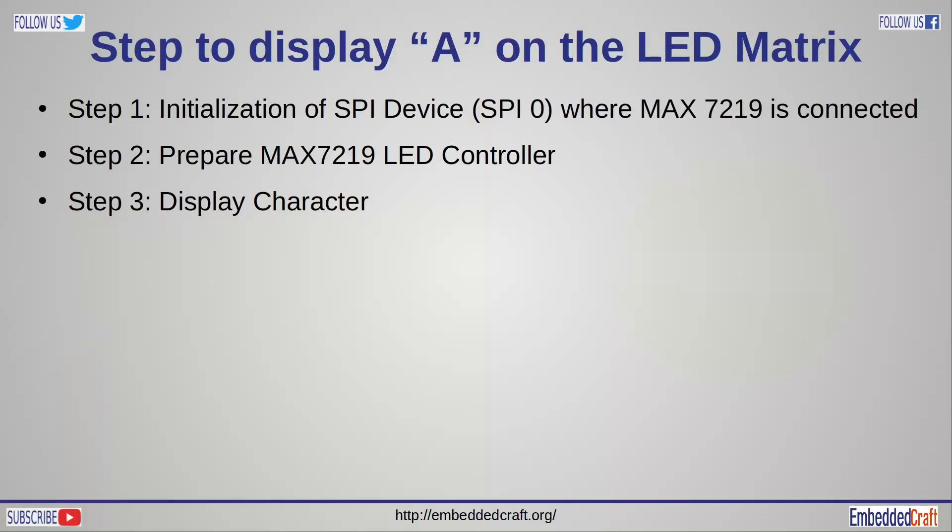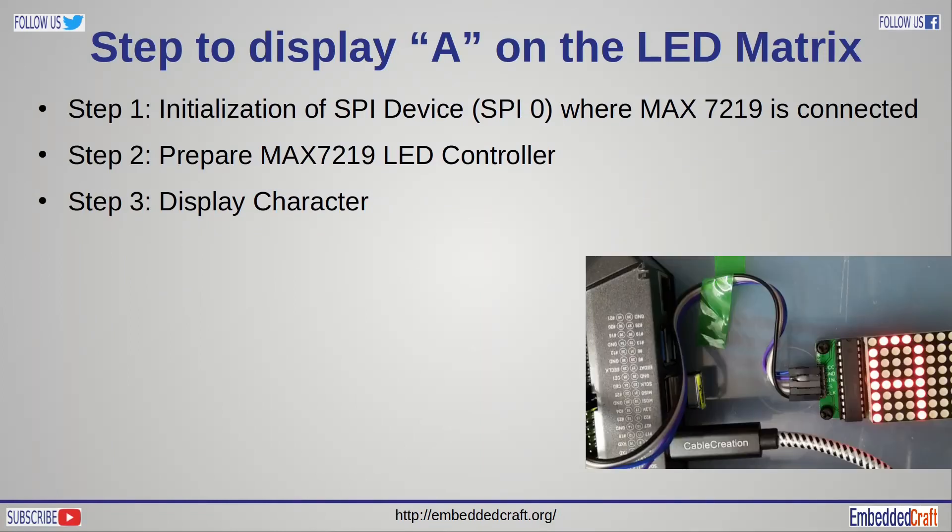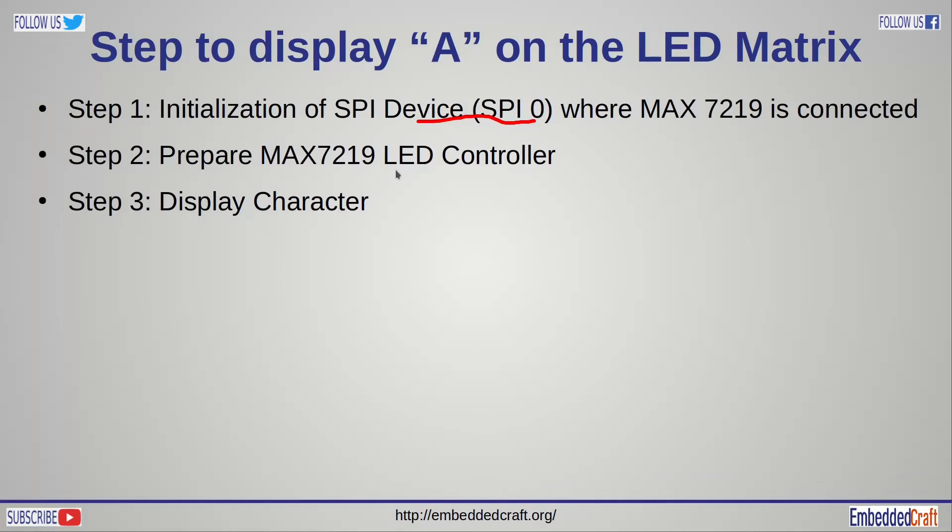Now we are ready to write C code. We need to write code in three steps. First step is to initialize SPI device 0, because MAX 7219 is connected to SPI 0. Second step will be preparing LED controller. And finally, display character.